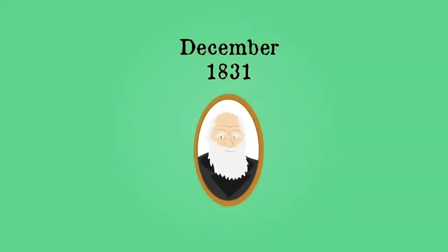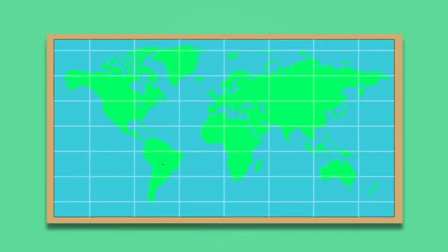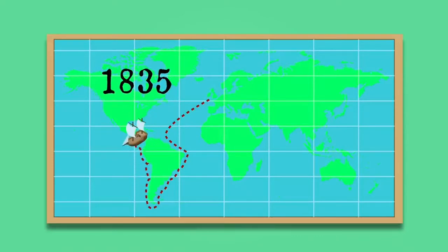In December 1831, a naturalist called Charles Darwin boarded the HMS Beagle bound on a surveying voyage to South America. Whilst the ship and crew carried out coastline surveys, Darwin was free to explore the islands en route. In 1835, the Beagle arrived at the Galapagos Islands near Ecuador.